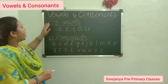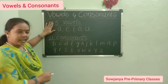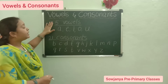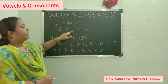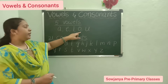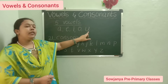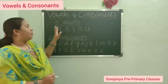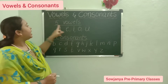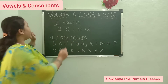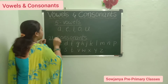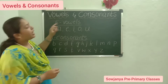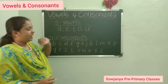Okay children, what are the names of the vowels? A, E, I, O, U. How many are there? Five vowels. How many vowels? Five vowels.